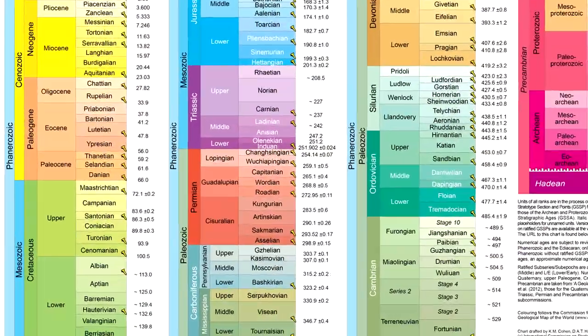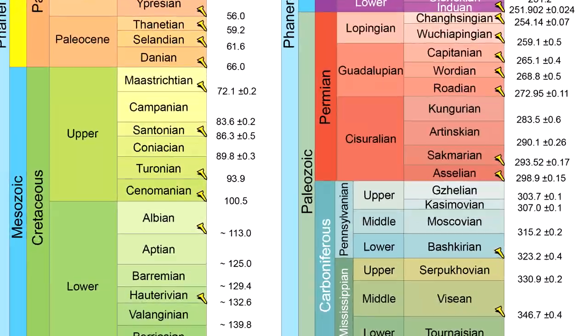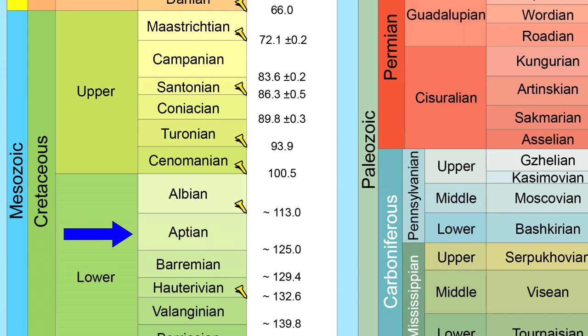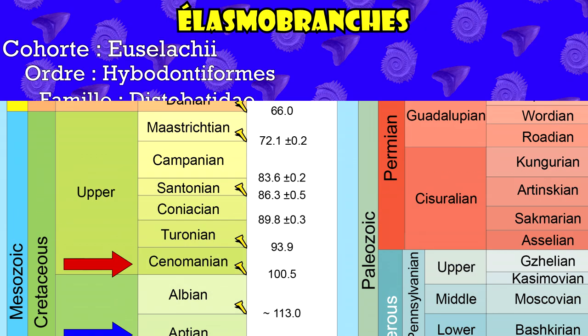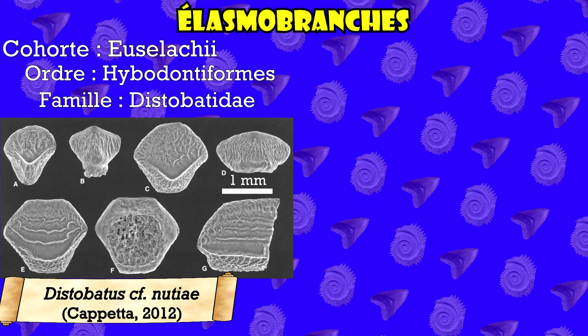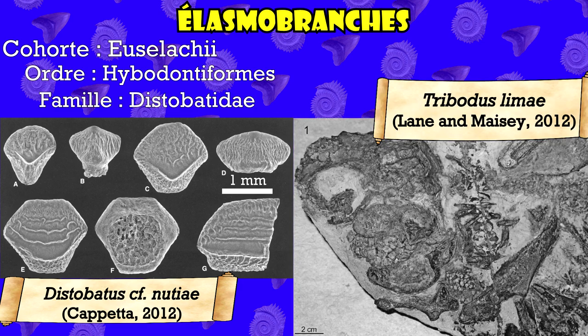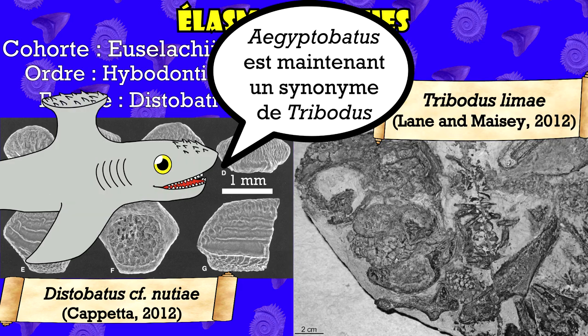Les dystobatidées est une famille qui apparaît au cours de l'Aptien et disparaît au cours du Cénomanien. Elle est caractérisée par une dentition de type broyeur, avec des dents épaisses de forme hexagonale dont la surface peut être ornementée. Parmi les genres présents dans cette famille, on retrouve dystobatus et aegyptobatus.